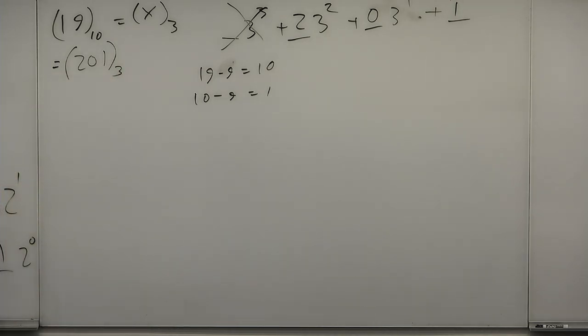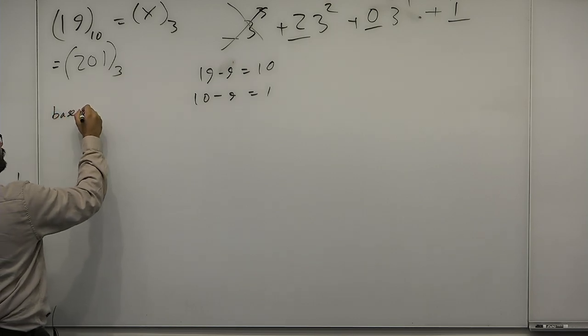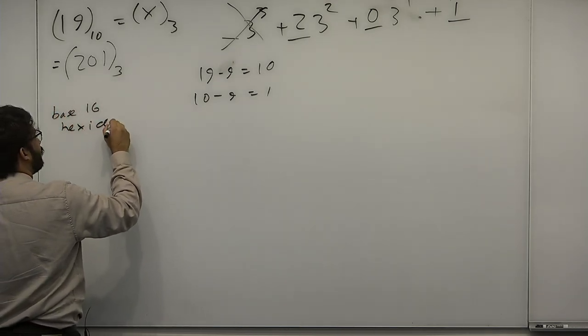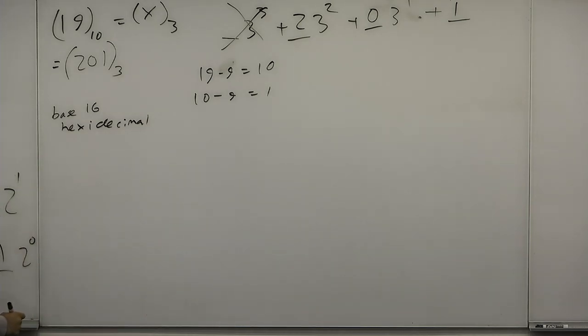Now in any base, the digits are going to be between 0 and b minus 1. So when you write a number in base 3, every number is a 0, 1, or 2. When you write a number in base 2, every number is a 0 or 1. When you write a number in base 10, every number is between 0 and 9. Now, that works kind of conveniently if you have each digit represented by a symbol for bases less than 10. Because we already have symbols for those numbers. But what about bases bigger than 10? So we say base 16 is called hexadecimal.